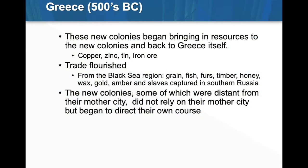These new colonies began to bring in resources to the colony itself and also back to Greece through trade. We see copper, zinc, tin, and iron ore, and trade flourished. From the Black Sea region they started getting a lot of things from Ukraine, which is basically southern Russia: grain, fish, furs, timber, honey, wax, gold, amber. And interestingly, slaves were captured in southern Russia and taken back to Greece.